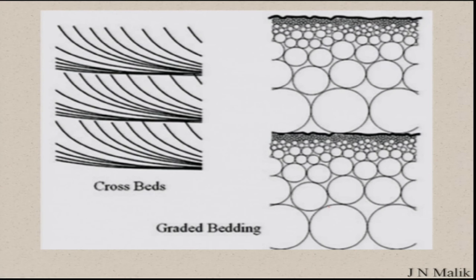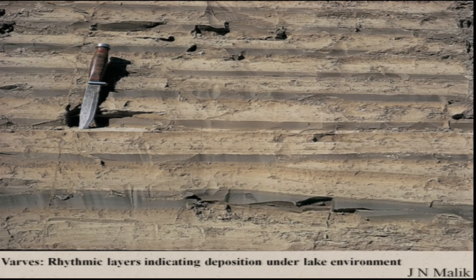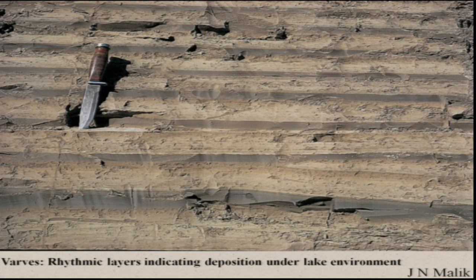Horizontal laminations, or what we call varve layers, show very fine layers indicative of deposition under a lake environment. When you understand these deposits and try to date them, you can also try to understand the depositional sequence in the region. This indicates a very calm environment under which they got deposited.